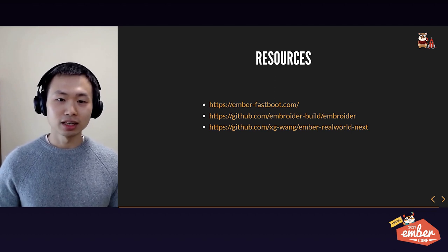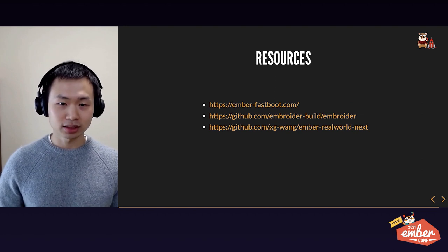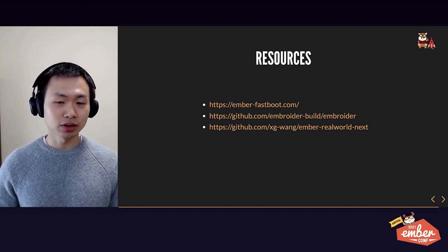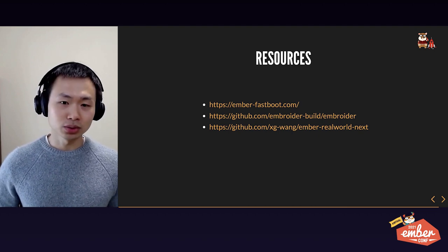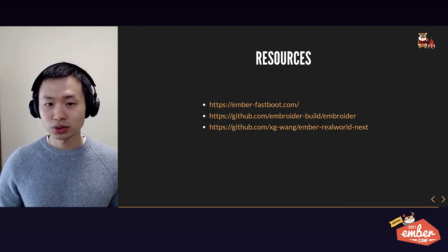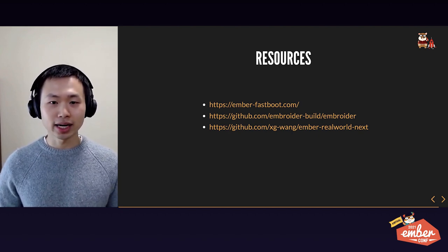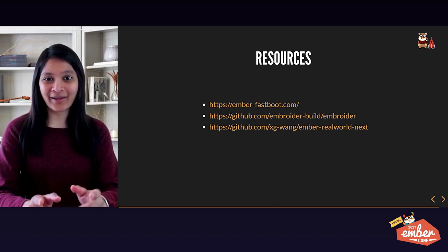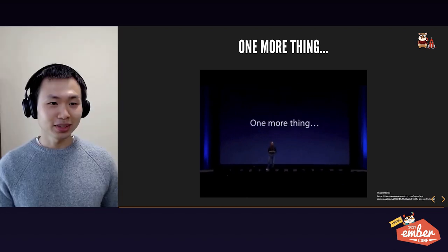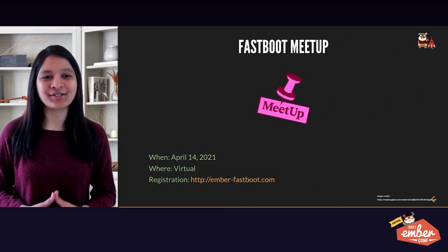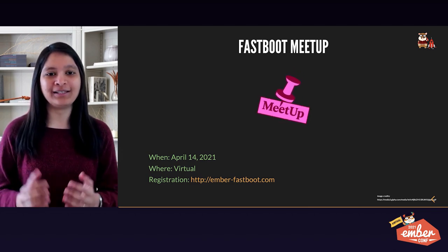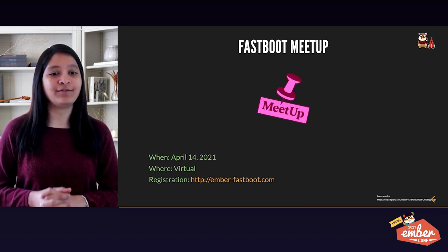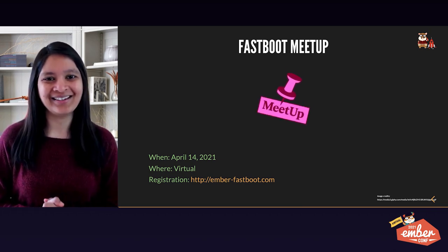Here are some resources to check out. You can learn more about Fastboot at its home page and Embroider at its GitHub repo — there are installation instructions and more details. All the code used for the demo app showcased today is accessible on GitHub. We really hope Fastboot and Embroider — these modern toolings — can provide a better Ember developer experience and real value for our end users. We hope you are as excited as we are for the future of Ember! As a bonus, we are hosting a virtual Fastboot meetup where we will do a deep dive on Fastboot and its various concepts. Please feel free to sign up on amberfastboot.com — we can't wait to see you all there. Thank you very much everyone!